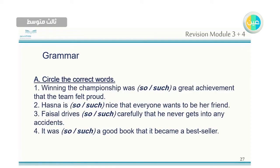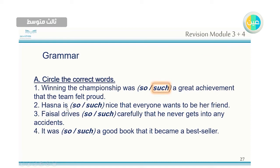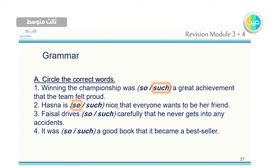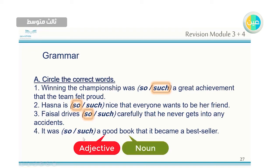Let's do some exercises. Number one: 'Winning the championship was ___ a great achievement that the team felt proud.' We have an adjective and a noun, so we use 'such'. Number two: 'Hasna is ___ nice that everyone wants to be her friend.' Only an adjective here, so we use 'so'. Number three: 'Faisal drives ___ carefully that he never gets into any accidents.' No noun after 'carefully', so we use 'so'. Number four: 'It was ___ a good book that it became a bestseller.' We have a noun here, so we use 'such'.